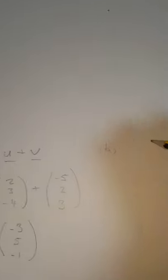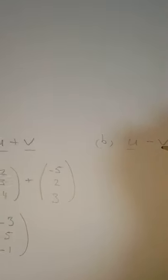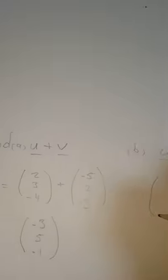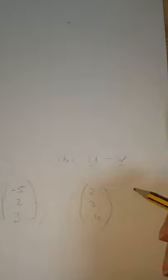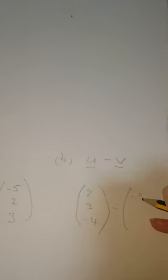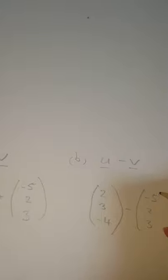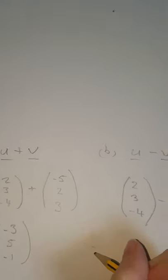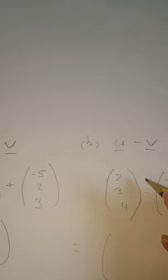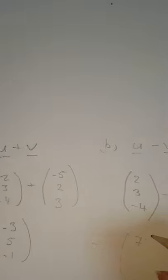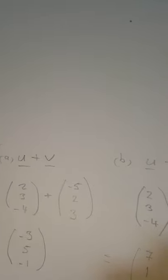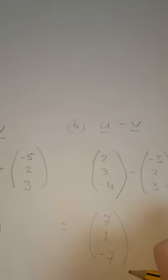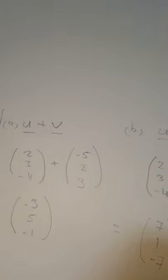For u minus v, I subtract the components of v from u. So 2 minus minus 5 is 2 plus 5, giving 7; 3 minus 2 gives 1; and minus 4 minus 3 gives minus 7. So the components of u minus v are 7, 1, minus 7.